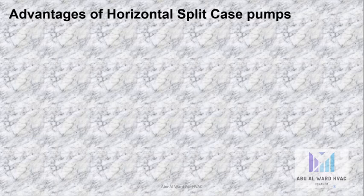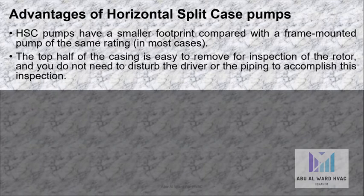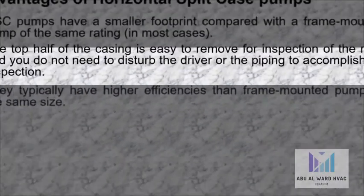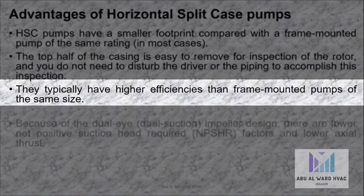Advantages of horizontal split case pumps: they have a smaller footprint compared with a frame-mounted pump of the same rating. In most cases, the top half of the casing is easy to remove for inspection of the rotor, and you do not need to disturb the driver or the piping to accomplish this. They typically have higher efficiencies than frame-mounted pumps of the same size.